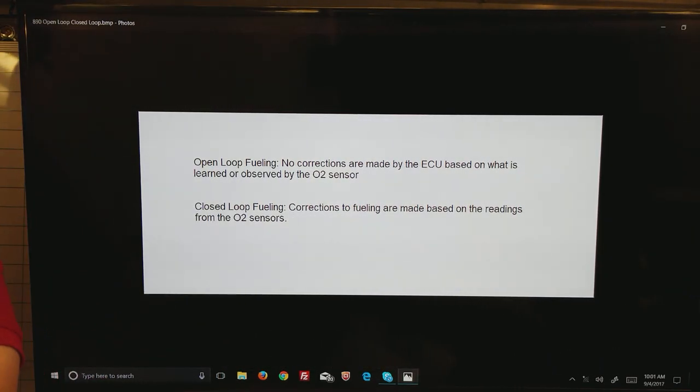I wasn't real sure how to draw these, so what I did is just defined them. Open loop fueling: that's when no corrections are made by the ECU based on what it has learned or observed from the O2 sensor. Closed loop fueling is when corrections to the fuel are made based on the readings from the O2 sensor, i.e., in the volumetric efficiency table, if we always seem to be lean at one spot in the table, what we do is adjust the fuel the next time around with the long-term fuel trims.